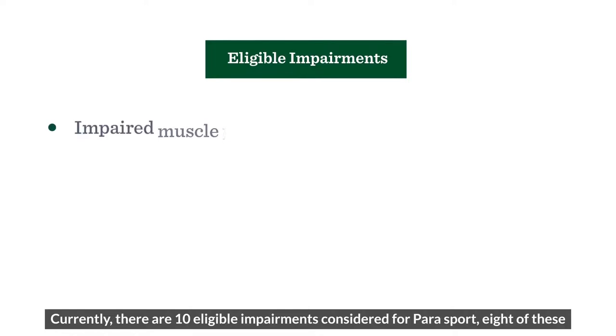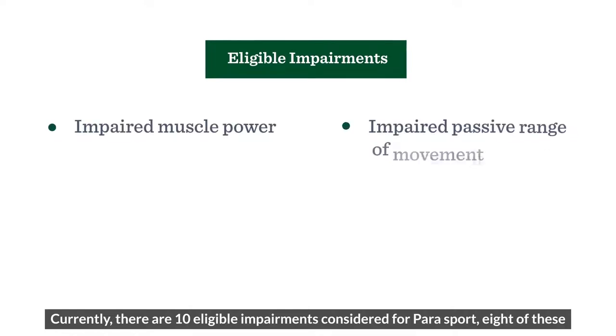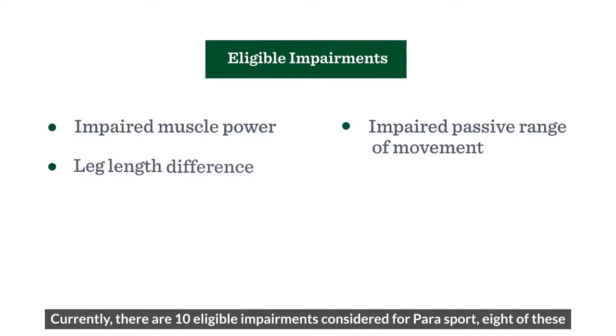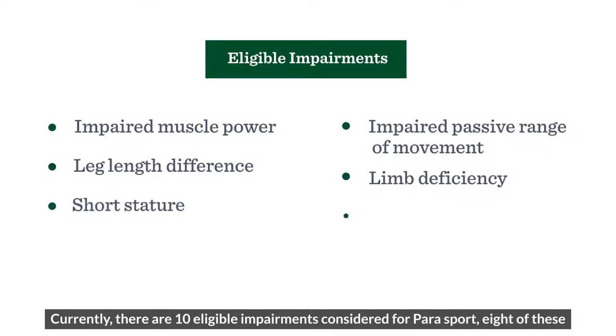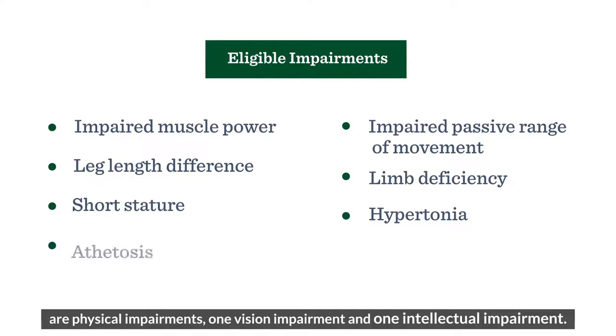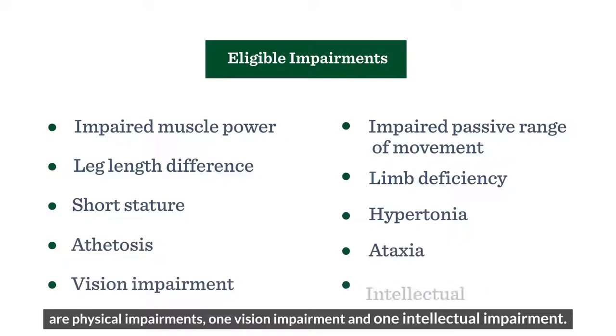Currently there are 10 eligible impairments considered for parasport. Eight of these are physical impairments, one is a vision impairment, and one is an intellectual impairment.